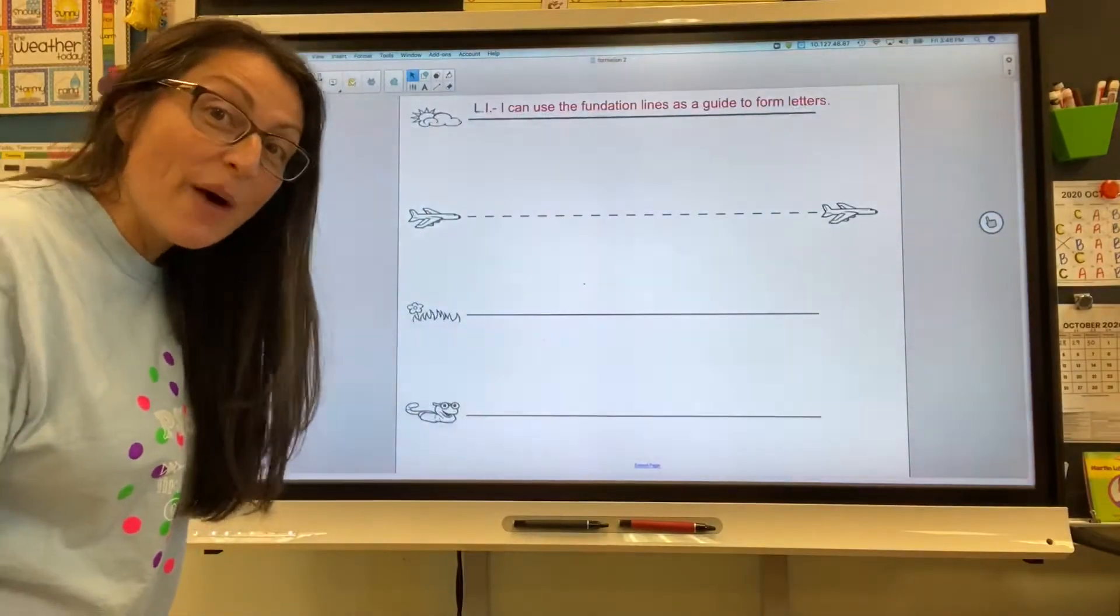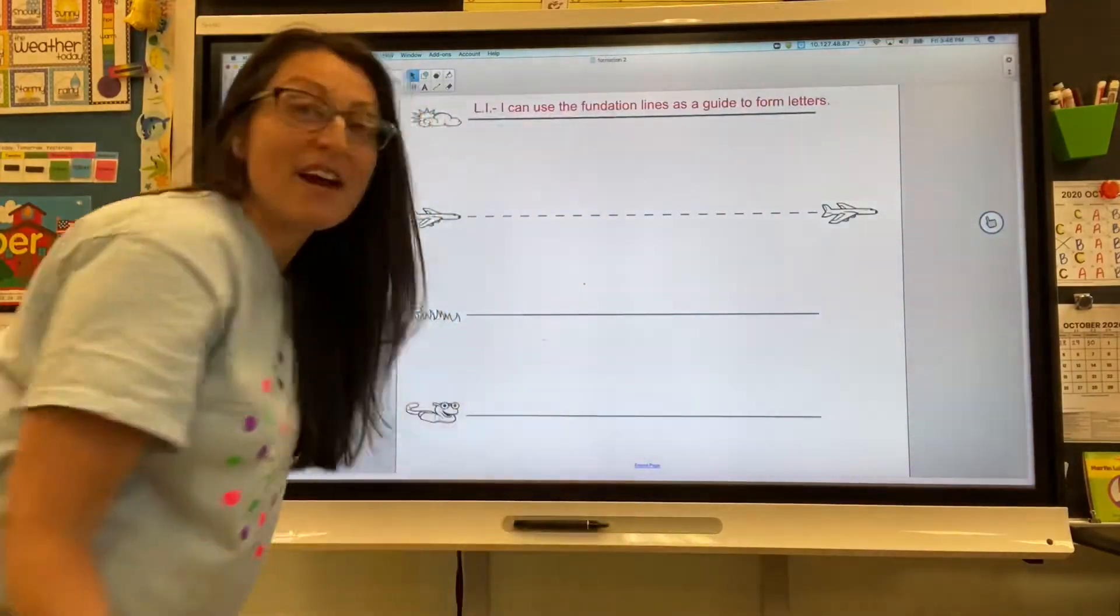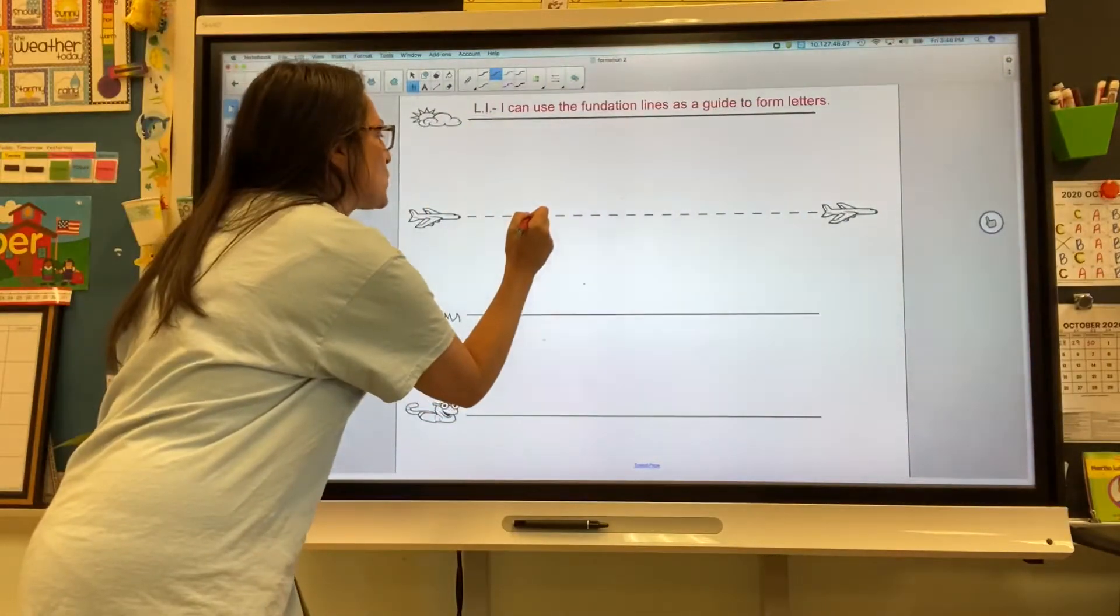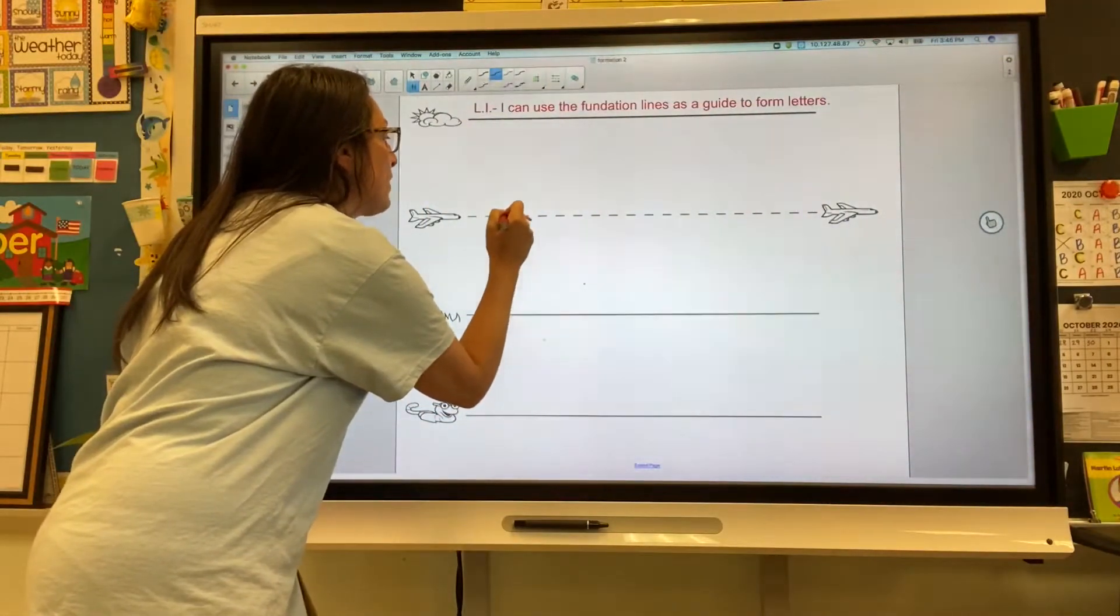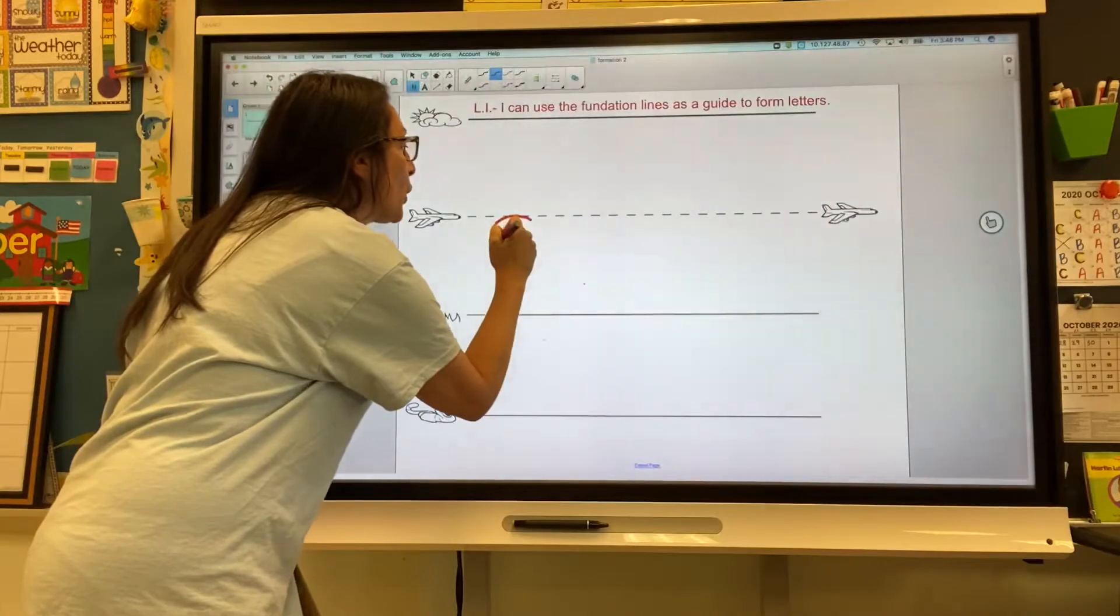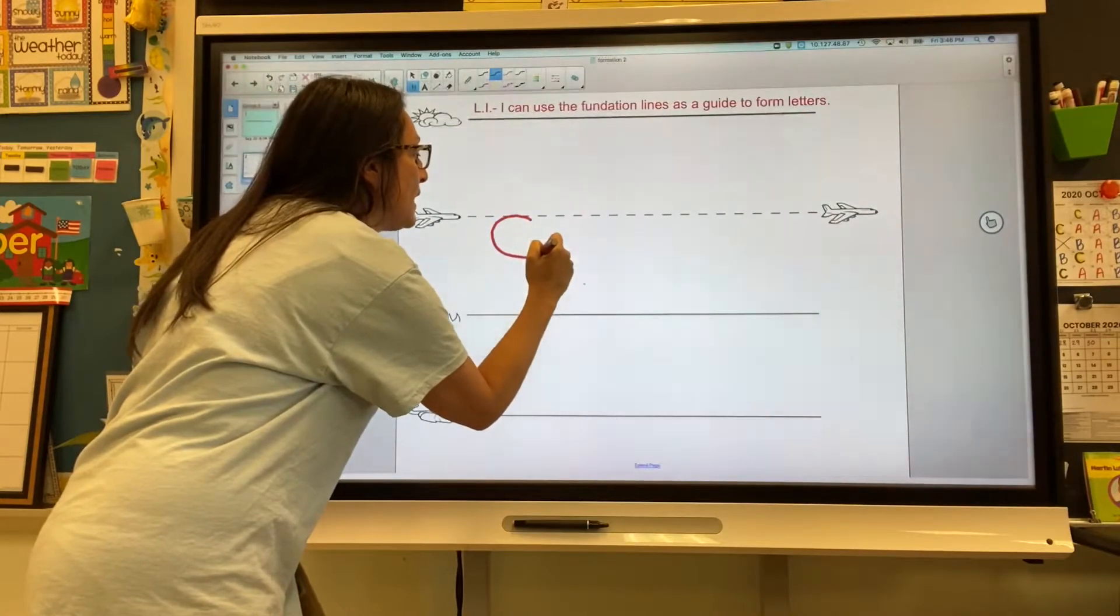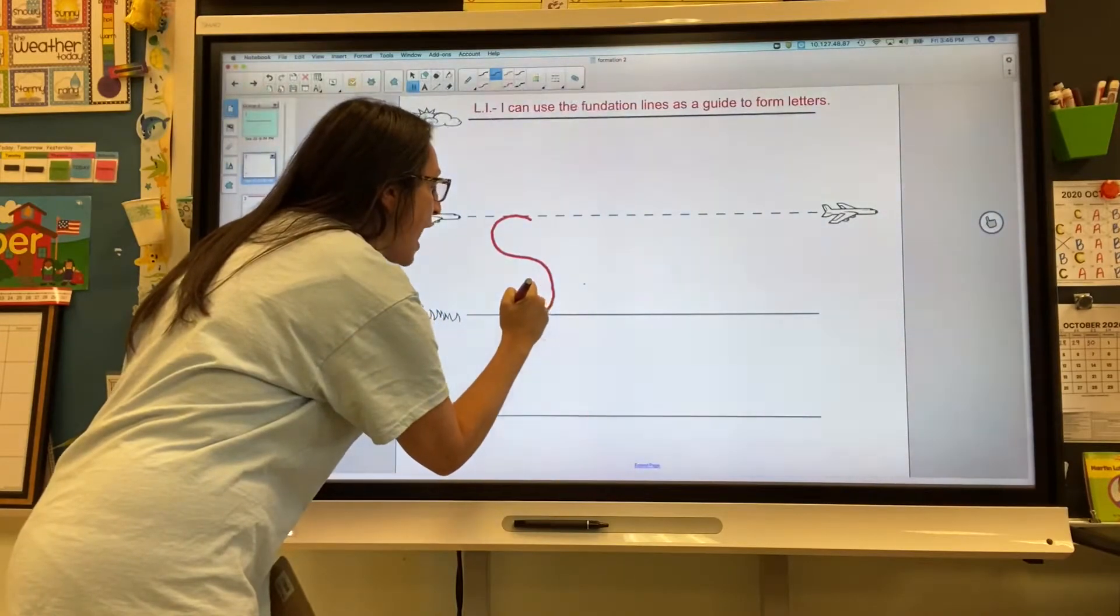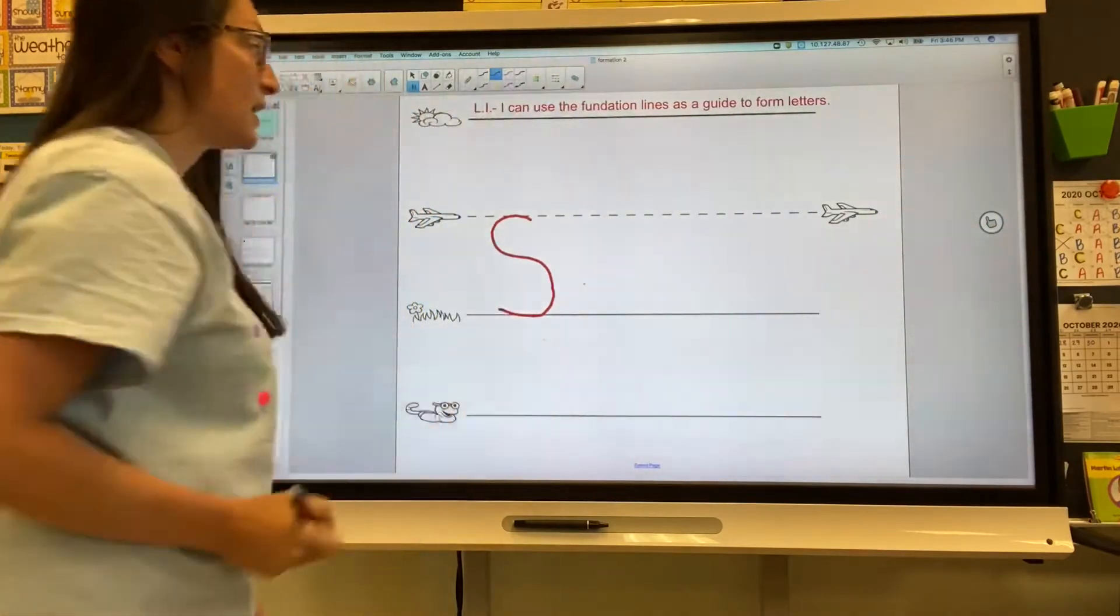So we're going to start right now at our plain line. Everyone say, plain line! Good, this is a tricky one so make sure you're being very careful. We curve in between and swerve down to the grass line. Done!